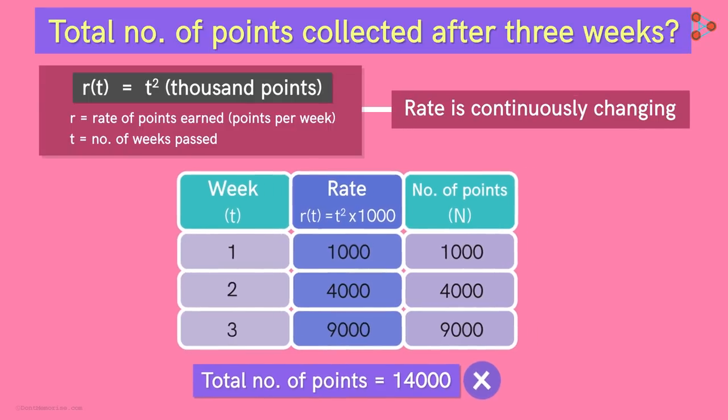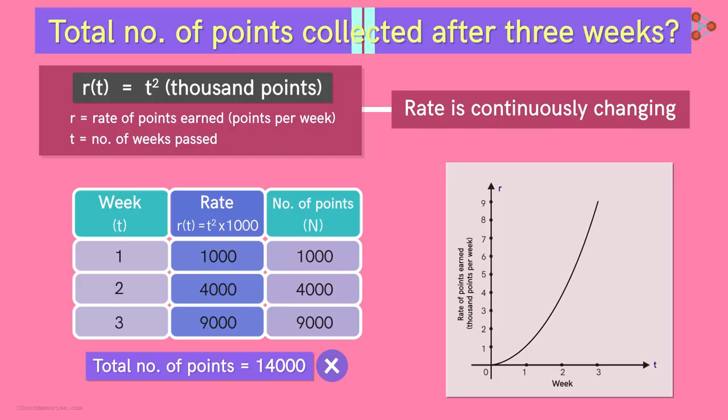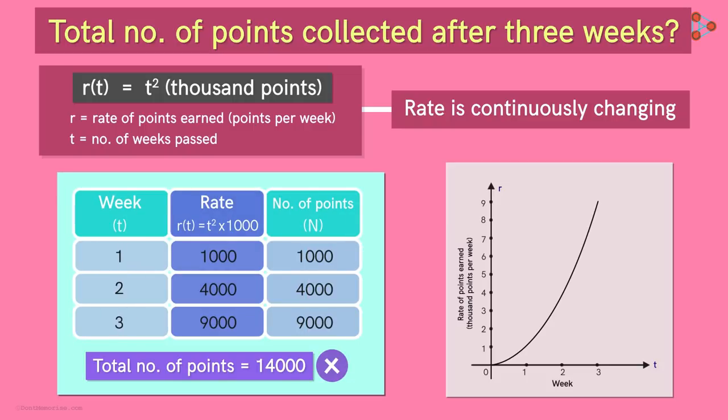Its graph looks like this. So how do we find the total number of points? For this, we need to understand what does this calculation tell us graphically? Let's continue this in the next part.